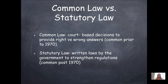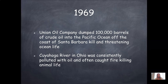We have something called common law and statutory law. Common law is where court-based decisions provide right and wrong answers — this was very common before 1970, when there weren't as many written laws, so a judge and lawyers would decide what was right and wrong. After 1970, we see statutory law, which is written laws by the government to strengthen regulations.